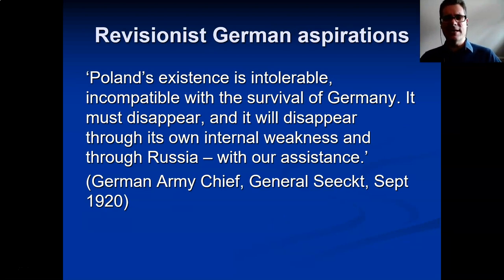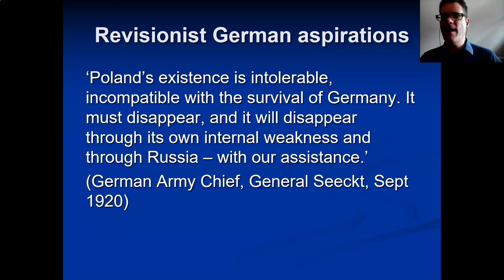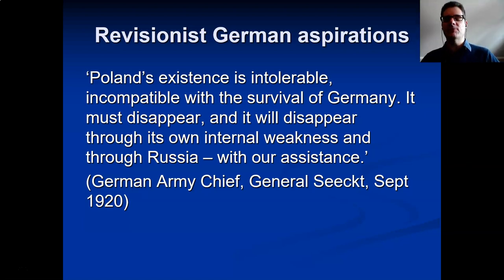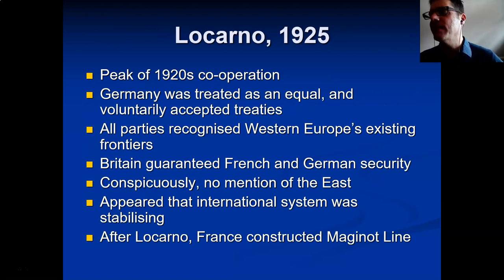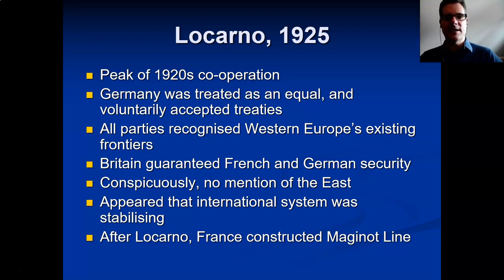Already by the Dawes Plan of 1924, Germany was starting to be rehabilitated. From being treated like a pariah state in 1919–1920, by the early 1920s Germany was tentatively reintroduced to international life. Germany participated in the Genoa Conference in 1922; whilst there, the Russian and German delegations went to the resort of Rapallo where they agreed a treaty establishing German-Russian diplomatic recognition and began clandestine military cooperation as well. Then after the Dawes Plan, Germany also participated at Locarno.